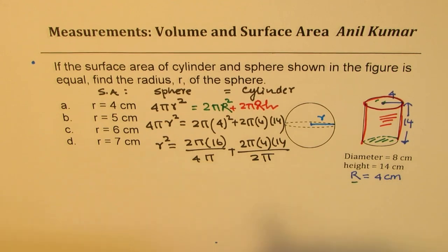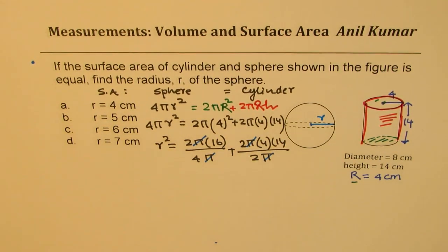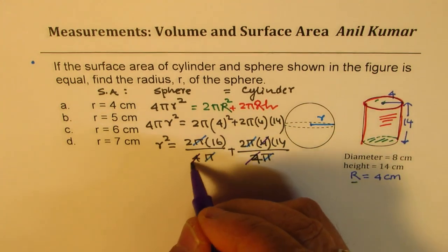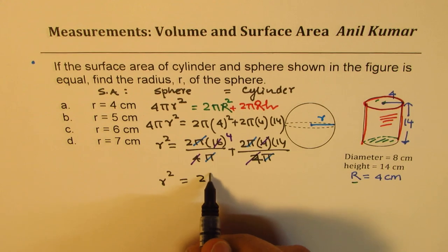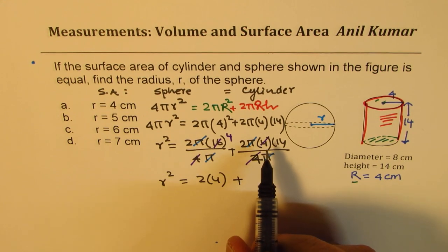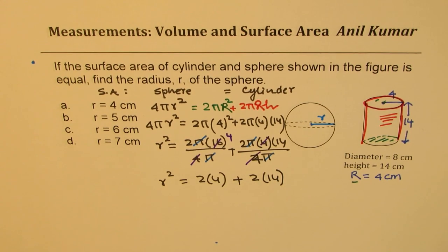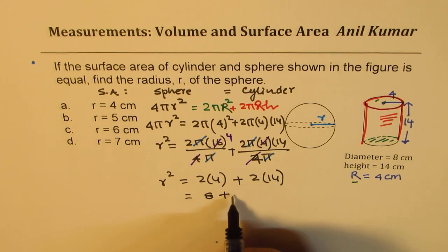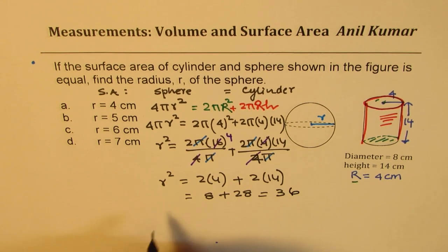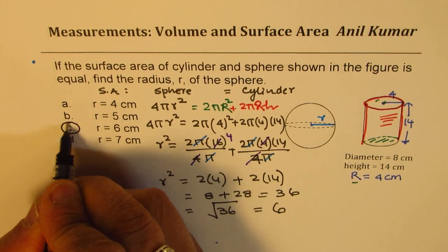Calculator is not allowed. After canceling π and 4 from both sides: R² = 2×4 + 2×14 = 8 + 28 = 36. So R = √36. Since radius is always a positive quantity, R = 6. So option C is the right answer. If you know the method, it should not take more than a minute.